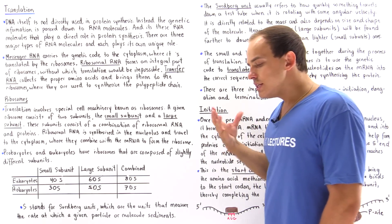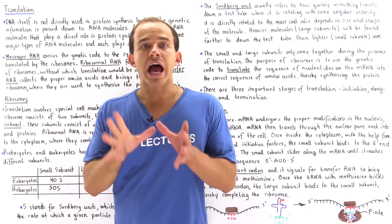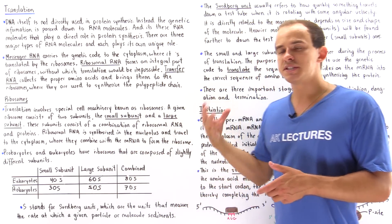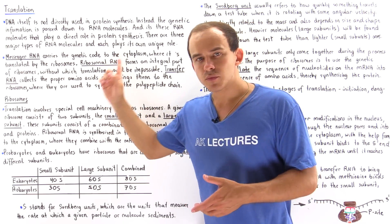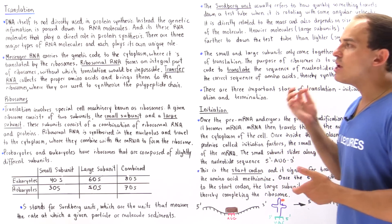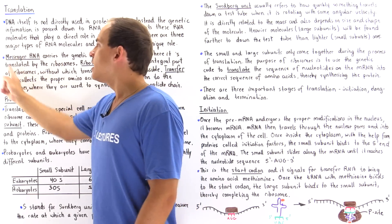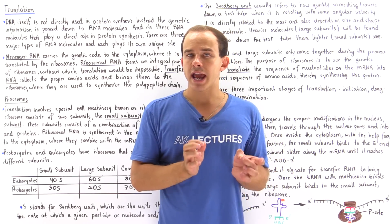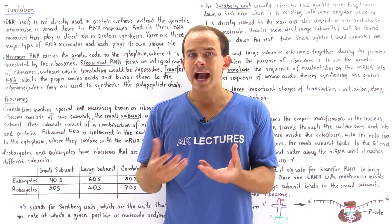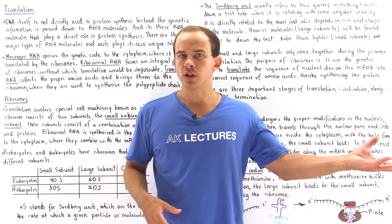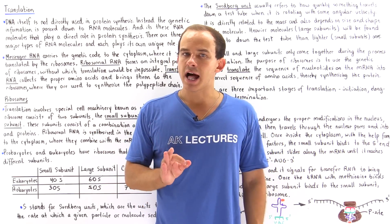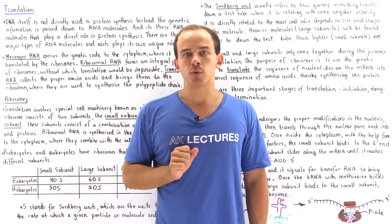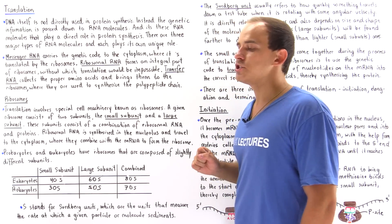There are three different types of RNA molecules we should be aware of, and each one serves its own specific function. The first is messenger RNA, also known as mRNA. The mRNA is basically the molecule that carries the genetic information from the nucleus into the cytoplasm of the cell. It's the mRNA molecule that is used as a template by the ribosomes to synthesize our polypeptide chain, our protein.